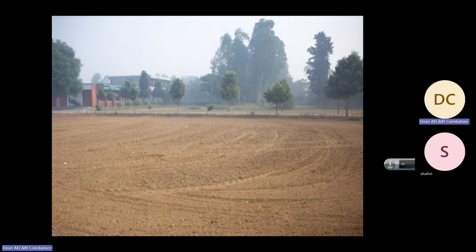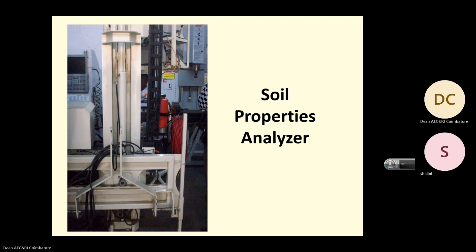The field is leveled by a laser-guided leveler. For soil properties analysis, this machine measures all 18 properties of the soil at depths of 15 centimeters, 30 centimeters, and 45 centimeters. Currently we take soil samples to a laboratory to analyze nutrients, but this machine directly measures all soil properties at different depths.